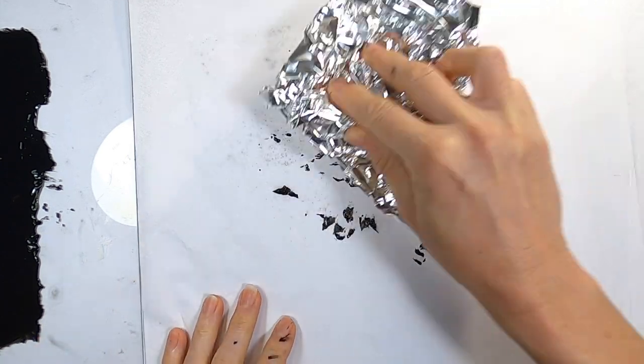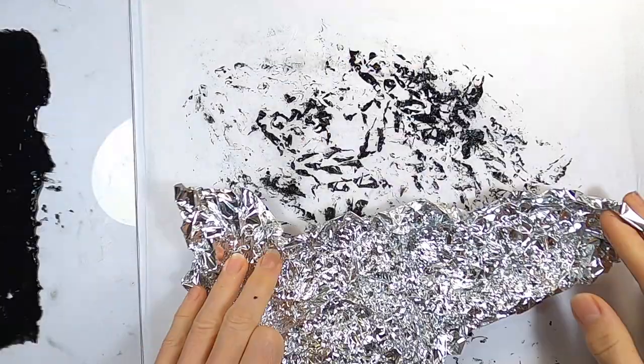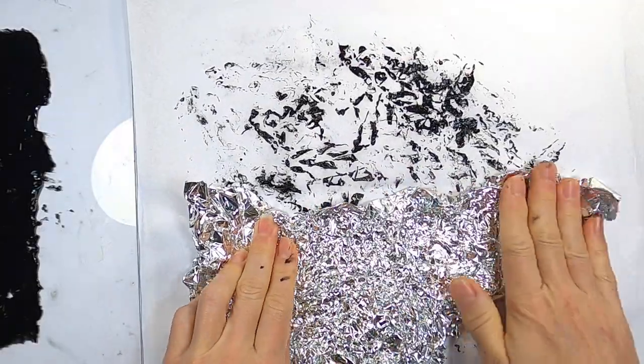Repeat that a few times, re-scrunch the foil, press it back into the paint and then onto the tissue. Then leave that to dry.